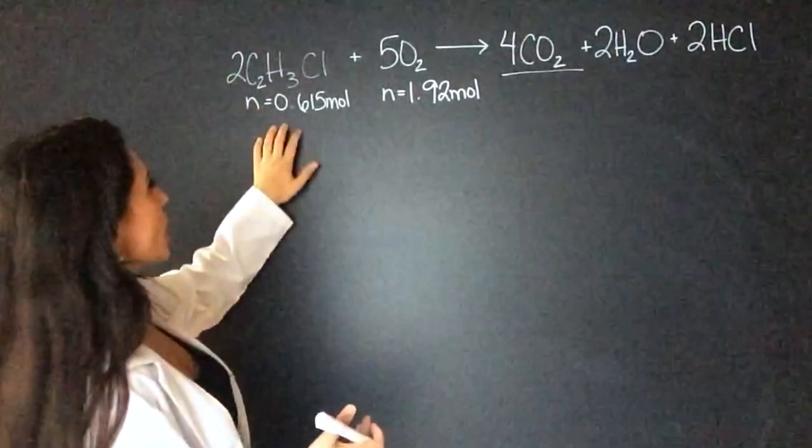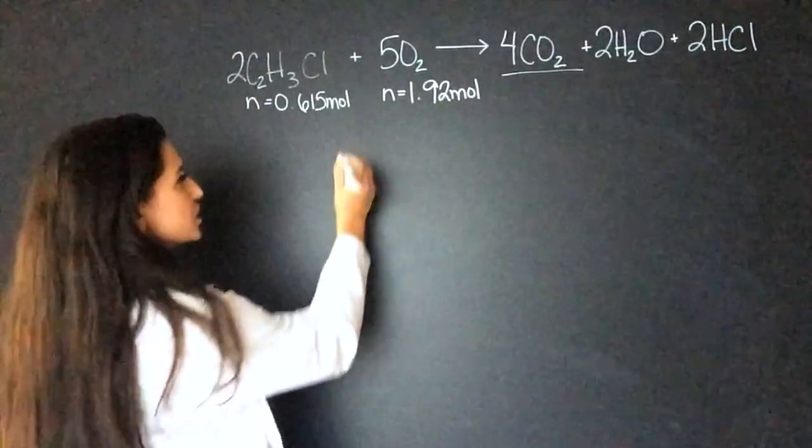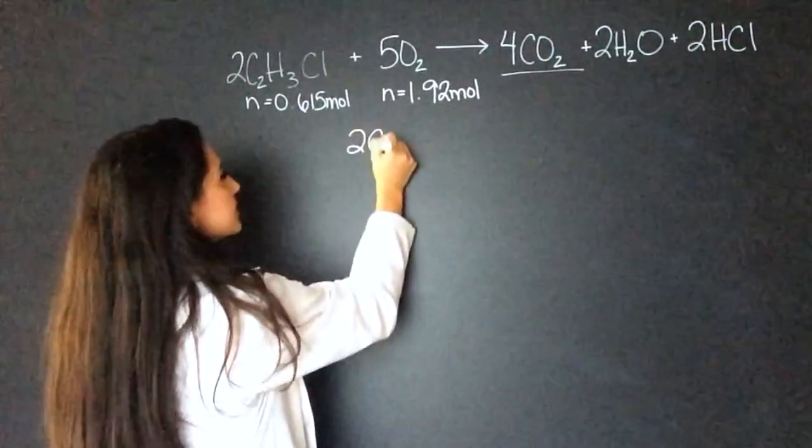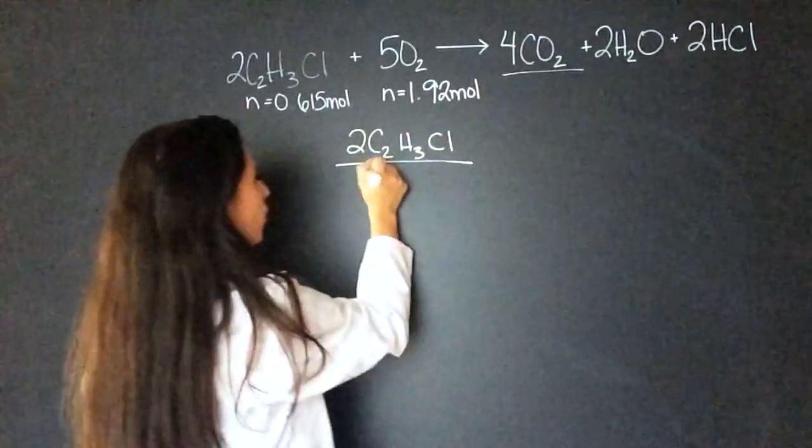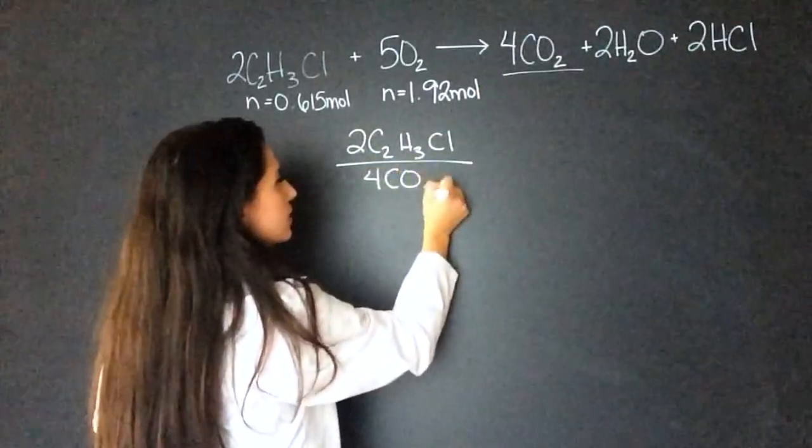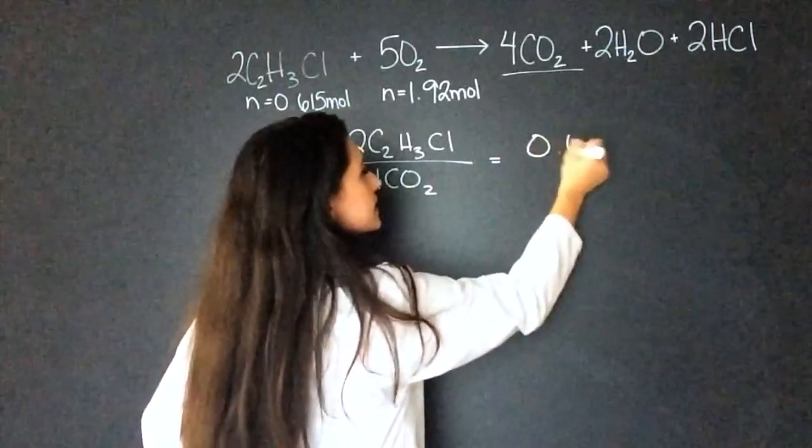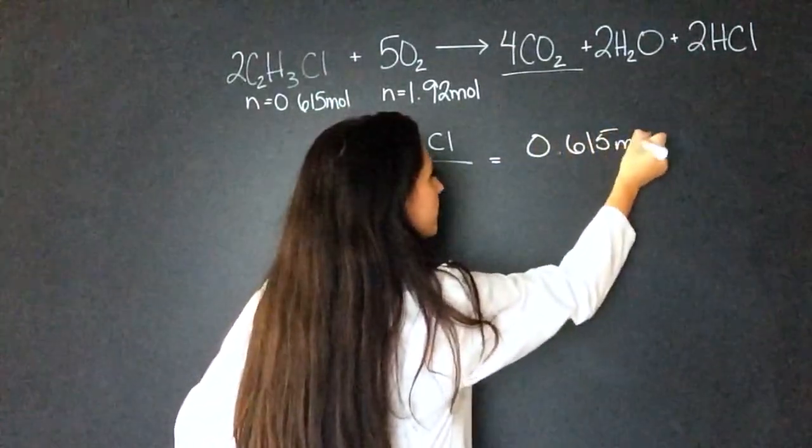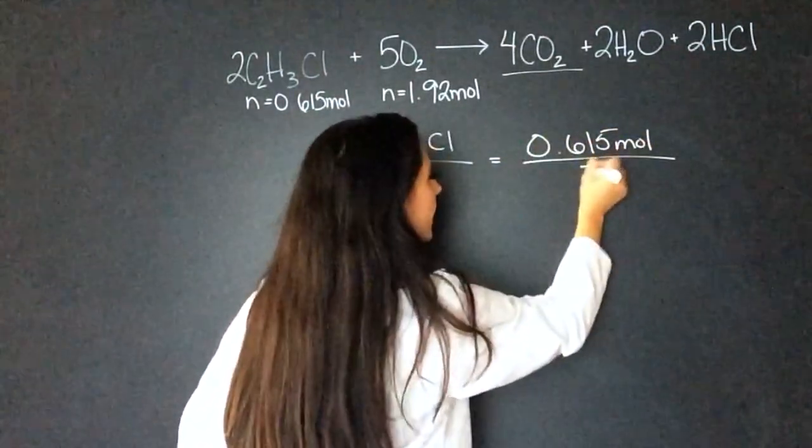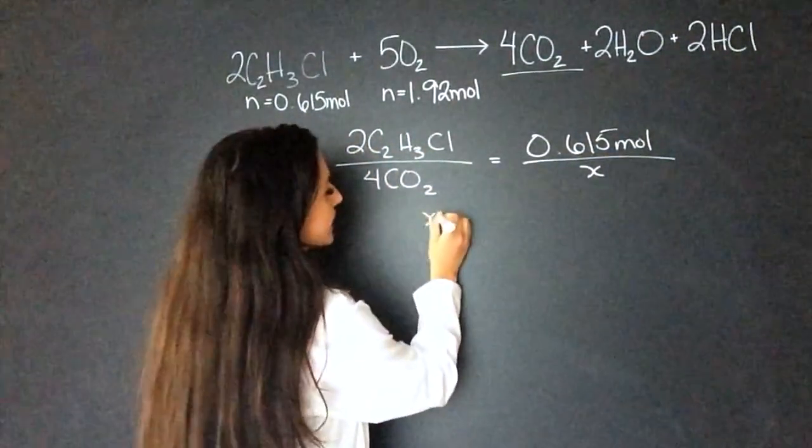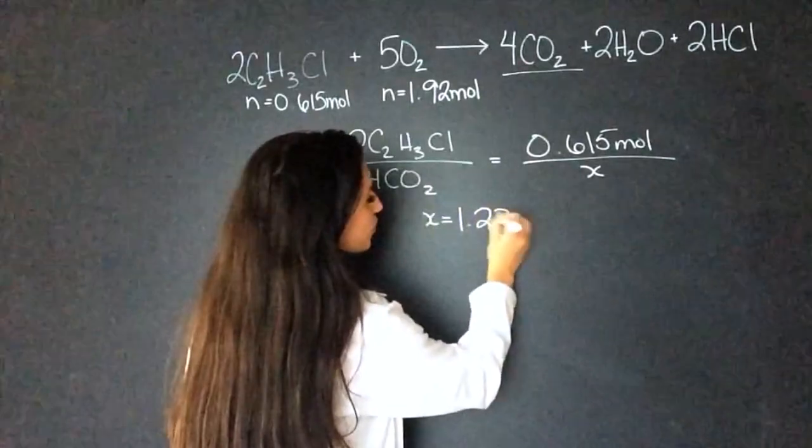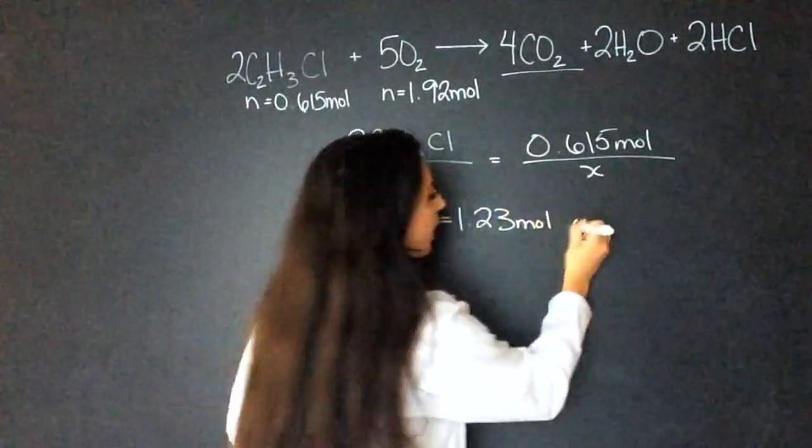So what we're going to do is start with C2H3Cl. So for two moles of C2H3Cl, we're going to get four moles of CO2. So that equals 0.615 mole divided by X. We don't know. When we cross multiply and divide that, we get X to be 1.23 moles of CO2.